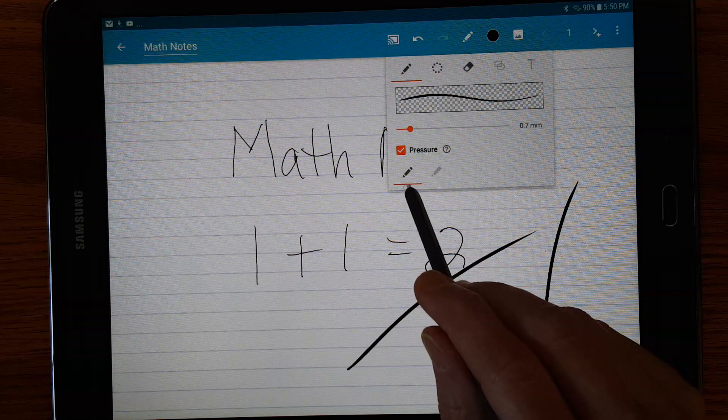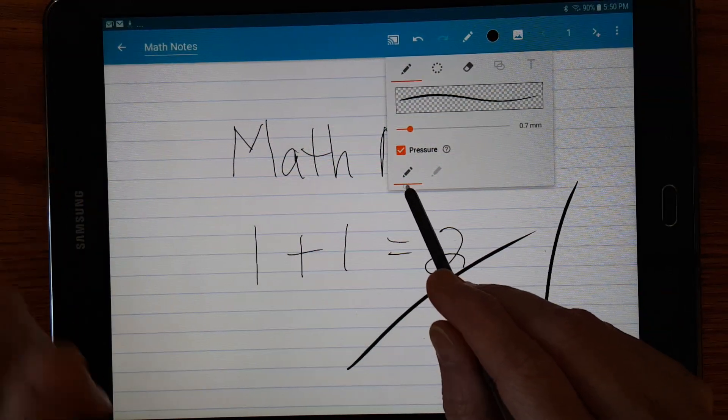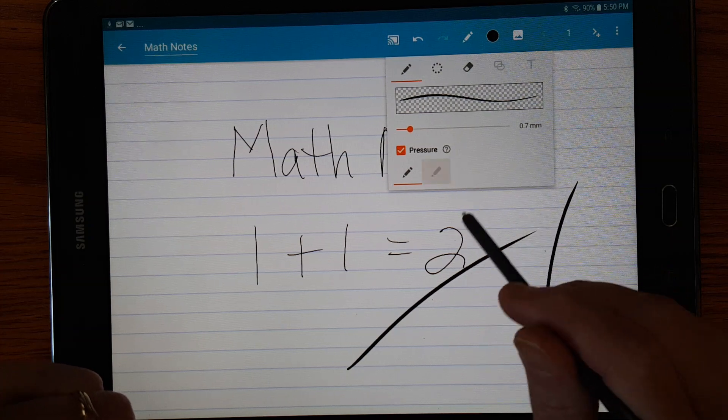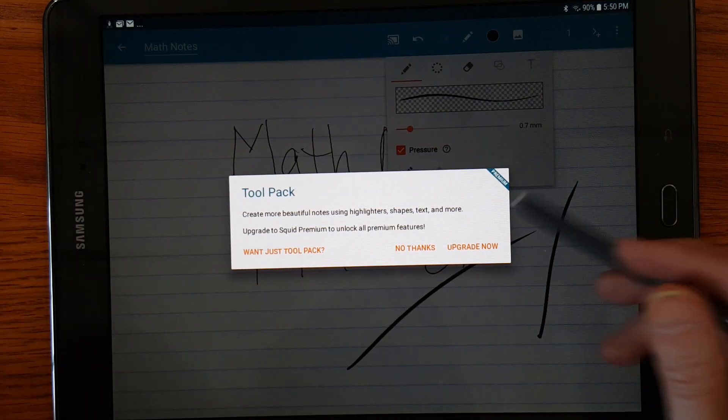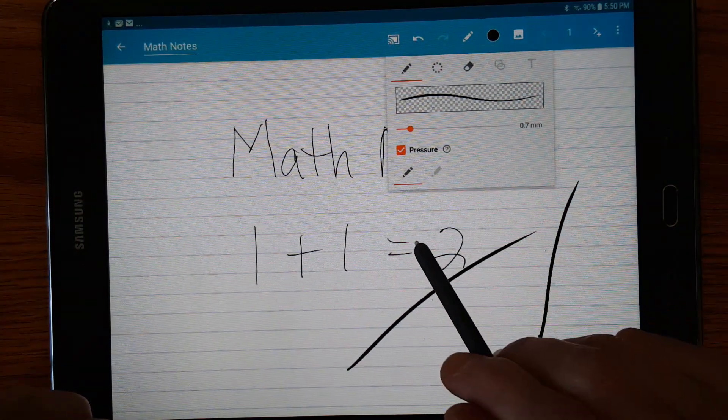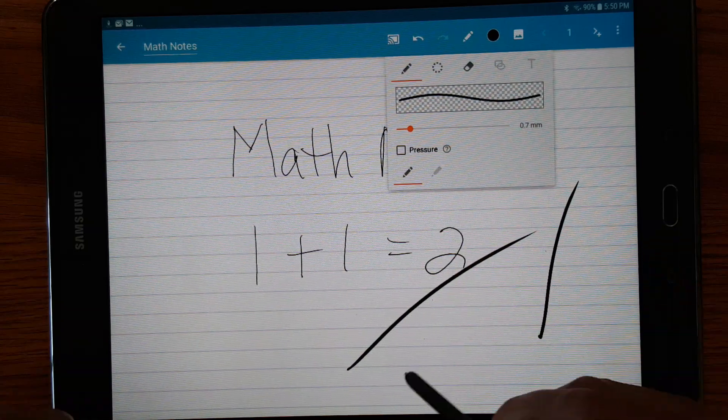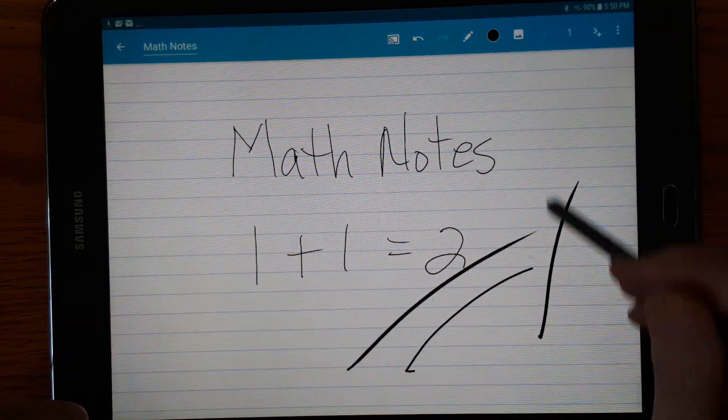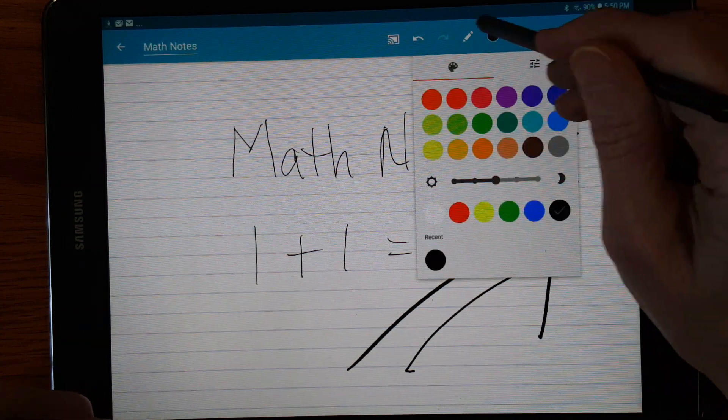You can choose between, now you don't have as many pen choices as you do on S note. You've got a pen and a highlighter. But the highlighter you have to pay to upgrade to that. So for free you do get a pen. You can turn the pressure sensitivity off and it's just a solid line. That's nice.